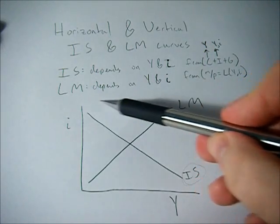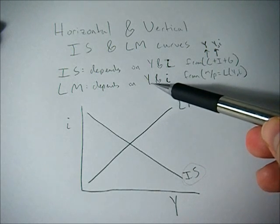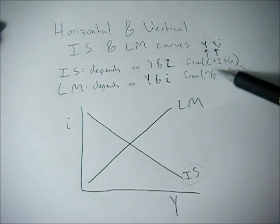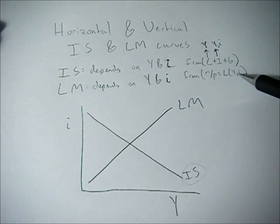Same in the LM equation. Typically, the LM equation depends on Y and little i. We have this M over P equation, the money supply divided by the price level, equals the liquidity preference or demand for money, which is a function of GDP, Y, and little i, the interest rate.